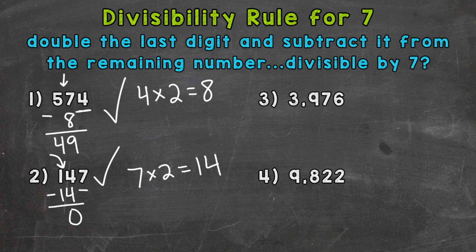On to number 3, we have 3,976. Our last digit here is a 6. So let's double it. 6 times 2 gives us 12. Our remaining number is 397. So we need to do 397 minus 12.